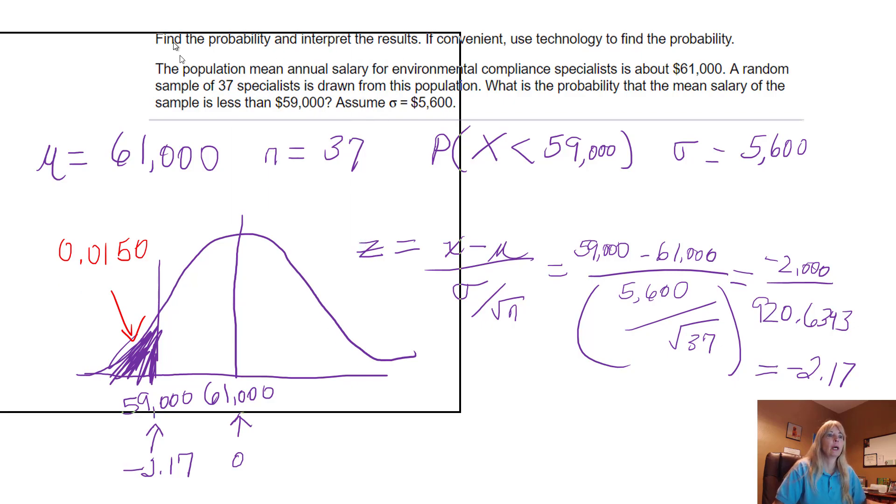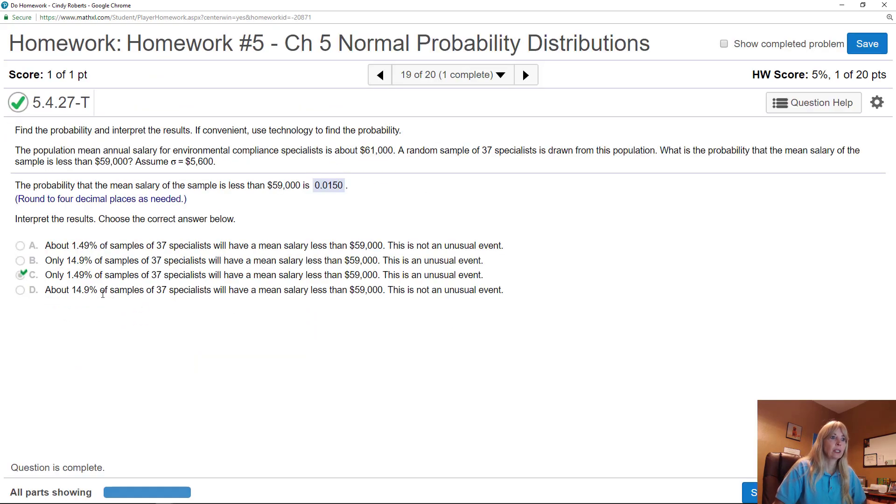So let me show you that right here. And that's what this is saying is the 1.49%. Of the 37 specialists with a mean salary of less than $59,000, this is an unusual event.